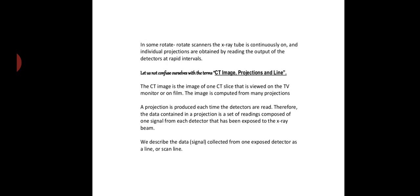The CT image is the image of one CT slice that is viewed on the TV monitor or on film. Images are computed from many projections. A projection is produced each time the detector is read. Therefore, the data contained in a projection is a set of readings composed of original signal from each detector that has been exposed to the x-ray beam. We describe the data collected from one exposed detector as a line or scan line. So a scan line, many scan lines can produce a projection, and many projections produce a CT image.